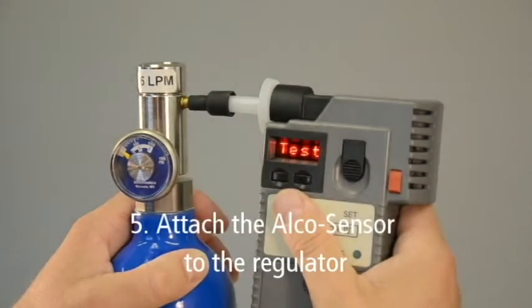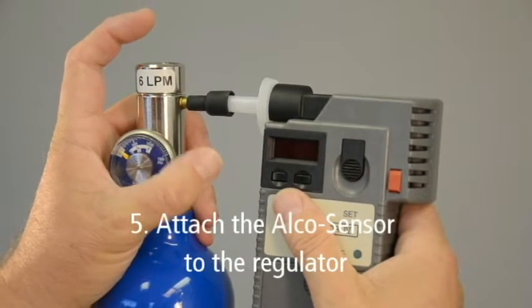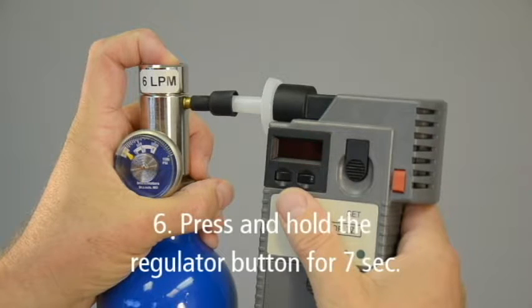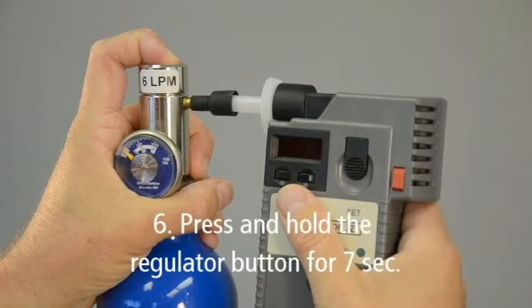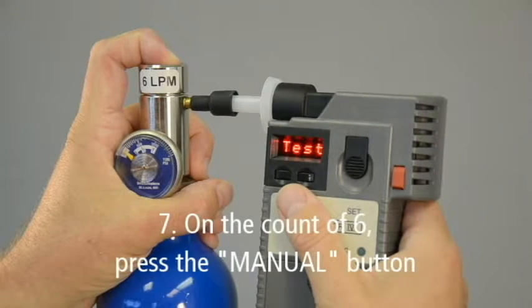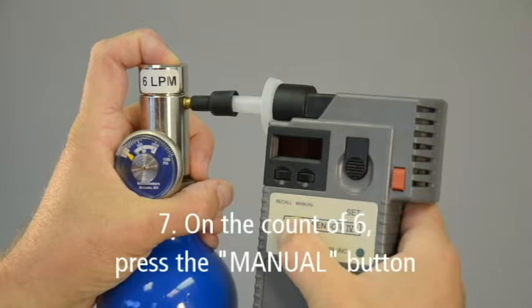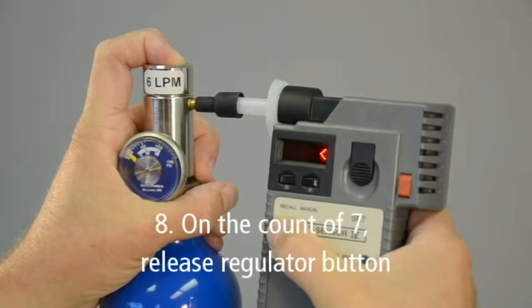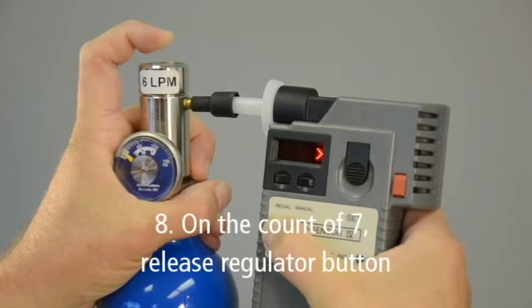Now attach the Alkosensor 4 to the regulator. To take a gas sample, press and hold the regulator button and count to 7. When you reach the count of 6, press the manual button on the front of the device. On the count of 7, release the regulator button.